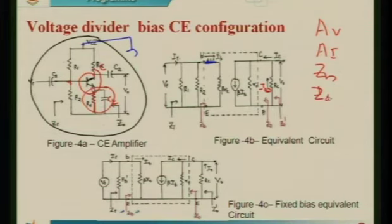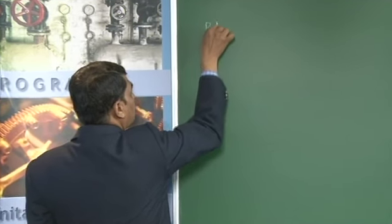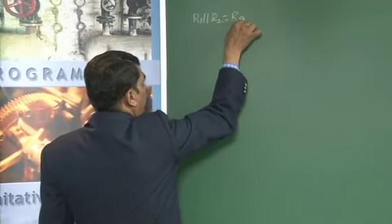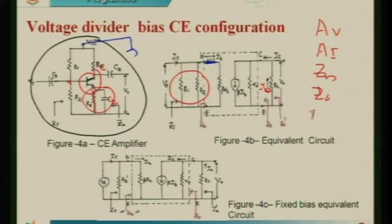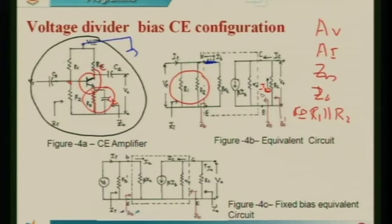In the previous class, we discussed the common emitter amplifier with fixed bias CE configuration. These two resistances R1 and R2 in a voltage divider biasing circuit — while finding the biasing voltages and currents, you make R1 in parallel with R2, treated as Rb. Hence, we can classify R1 and R2 such that their parallel combination equals Rb. When R1 and R2 parallel combination equals Rb, this circuit analysis is identical to the fixed bias circuit discussed in the previous session.